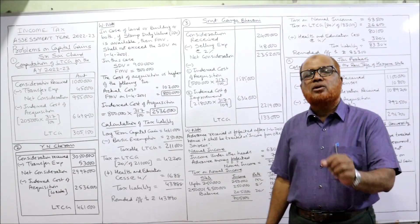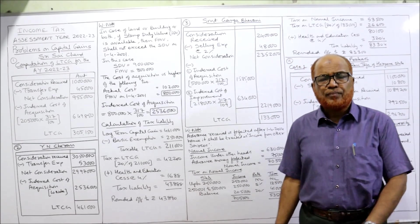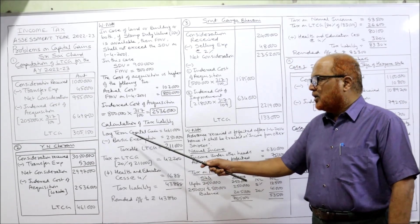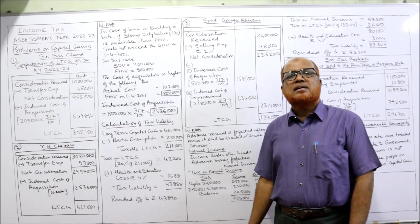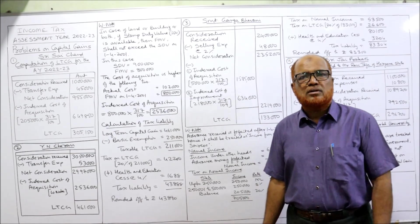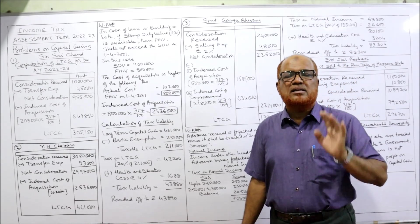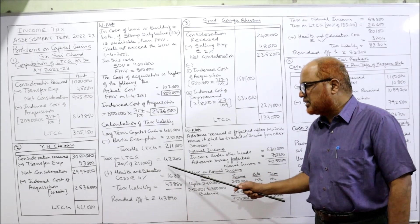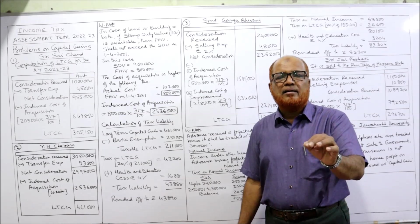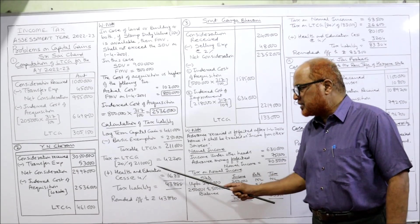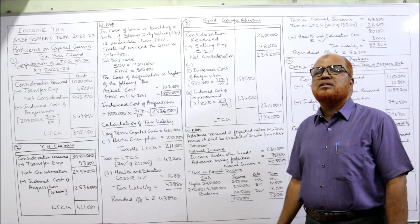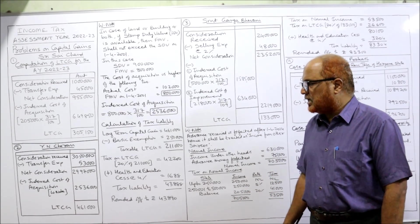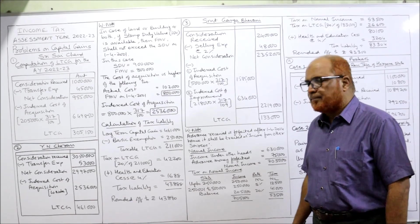The key point in this problem is regarding stamp duty and fair market value. Now the problem also asks to calculate tax liability if income under other heads is nil — he has only one income, LTCG, taxed at a flat rate of 20%. Long-term capital gain is Rs. 4,61,000. Basic exemption of Rs. 2,50,000 is deducted, giving taxable LTCG of Rs. 2,11,000. Tax at 20% on Rs. 2,11,000 is Rs. 42,200. Adding mandatory health and education cess at 4% — Rs. 1,688 — gives total tax of Rs. 43,888, rounded off to Rs. 43,890.